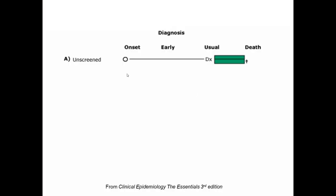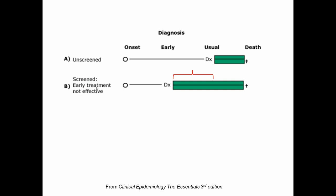So let's look at this graphically. We have an unscreened person: they have the onset of disease, here's that asymptomatic phase, here's where symptoms develop and a diagnosis is made, and this green box is the time of survival knowing you have that disease, and then ultimately the patient dies. Well if we take a screened population but early treatment is not effective, what you can see here is that we've moved diagnosis earlier. That's what screening is supposed to do. So this green box of survival knowing you have disease looks bigger and looks longer.